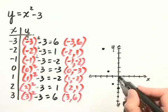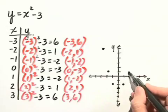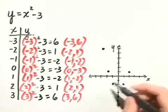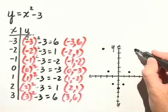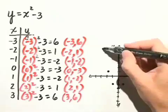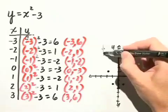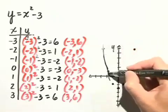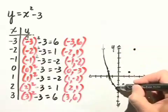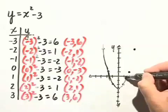Our next coordinate is 2, 1. So 2 to the right and up 1. And our last coordinate is 3, 6. We plot that point and connect our points with a smooth curve. And we can see the resulting sketch is the graph of a parabola.